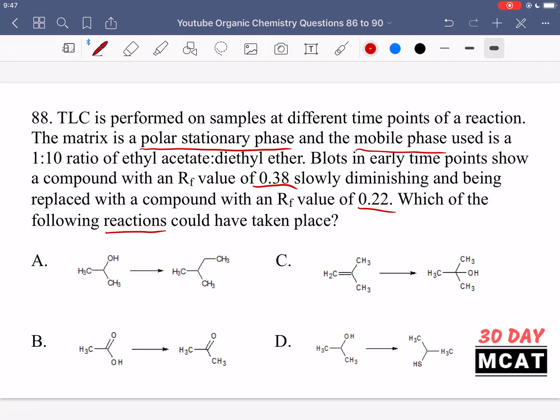So A is incorrect because there used to be this OH group and now it turned into this ethyl group. That is incorrect because it became more nonpolar. This would mean that we get a higher RF later on instead of a smaller one. B is also incorrect because you got rid of that OH group and replaced it with a methyl. So you took a carboxylic acid and turned it into a ketone. No.